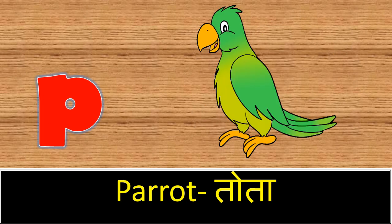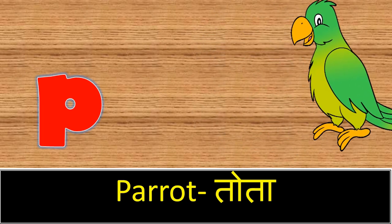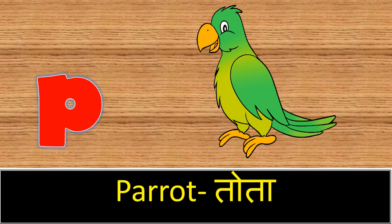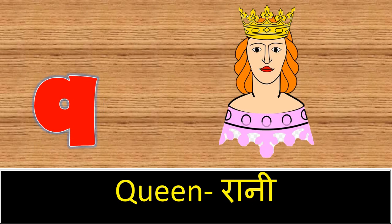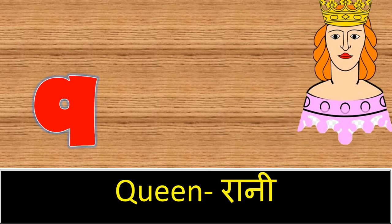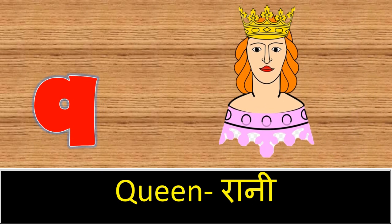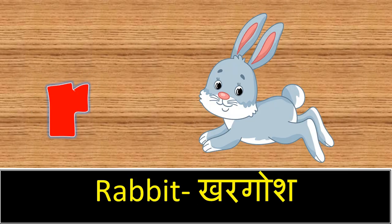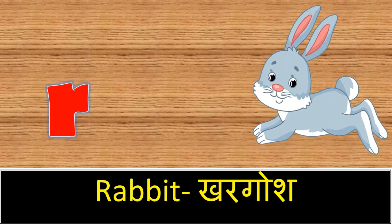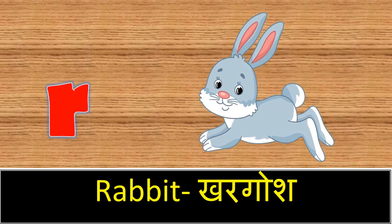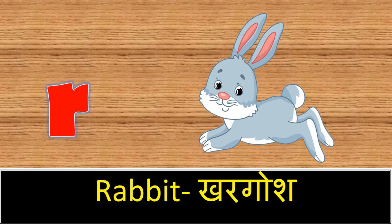P. P for parrot. Parrot means tota. Q. Q for queen. Queen means rani. R. R for rabbit. Rabbit means kargosh.